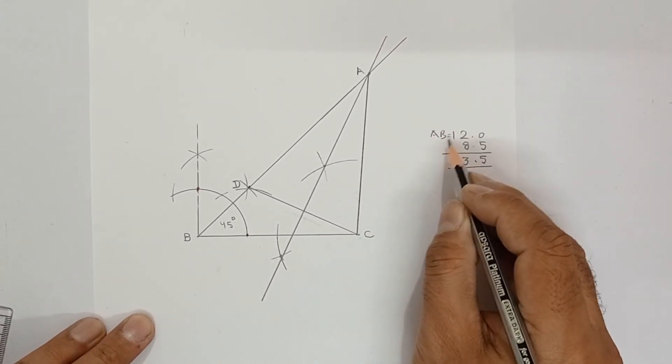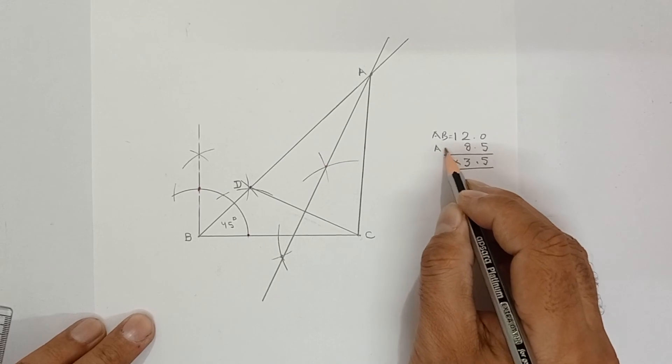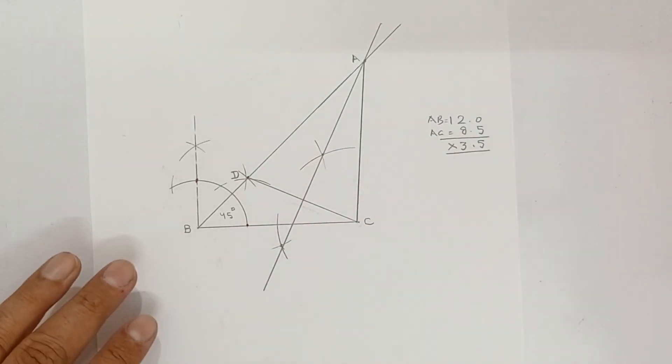AB is 12 centimeter and upon measurement, AC is 8.5. So, triangle ABC is the required triangle.